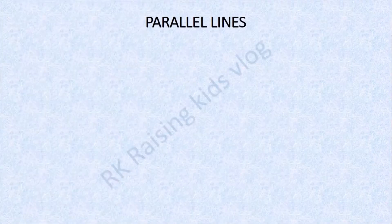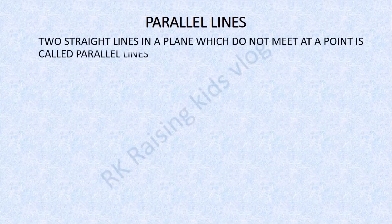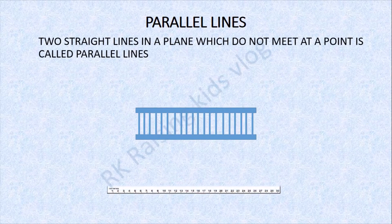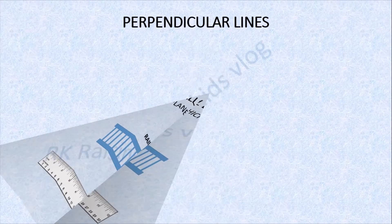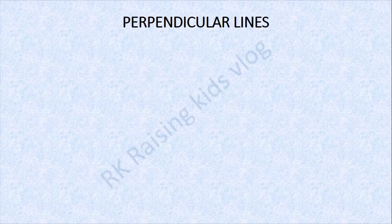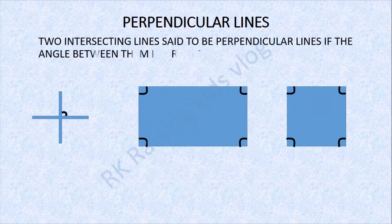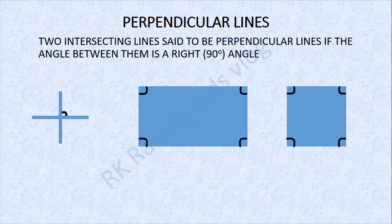Next: Parallel lines. Two straight lines in a plane which do not meet at a point are called parallel lines. Example: the edges of a track ruler. Next is perpendicular lines — this is a little similar to intersecting lines. Two intersecting lines are said to be perpendicular lines if the angle between them is a right angle, 90 degrees. Examples: the plus sign, rectangle, square, etc.